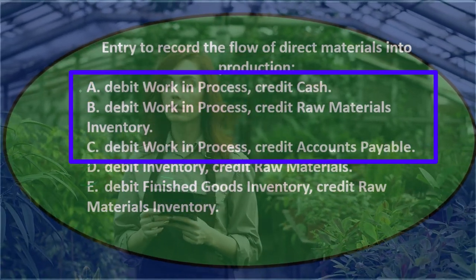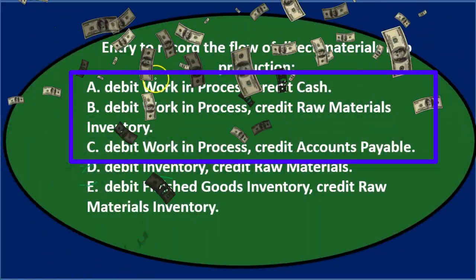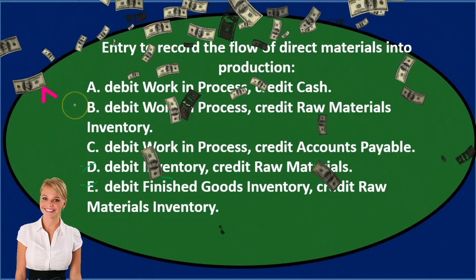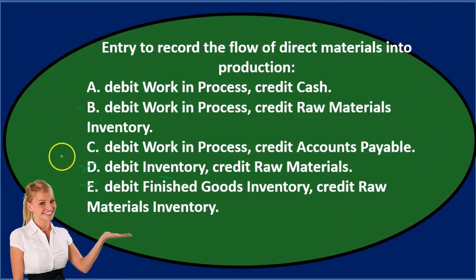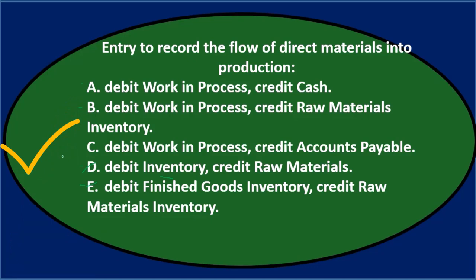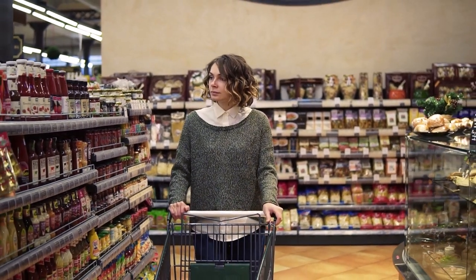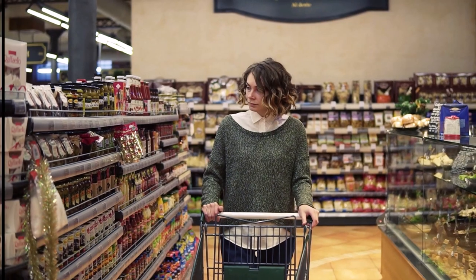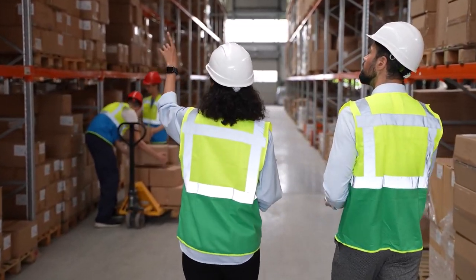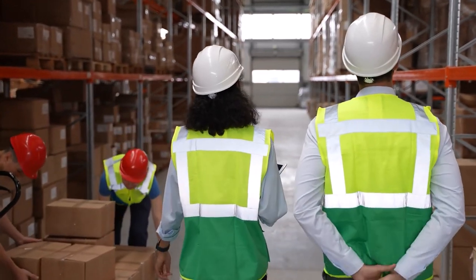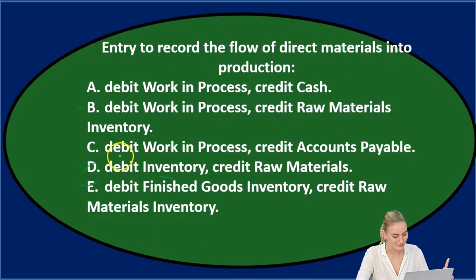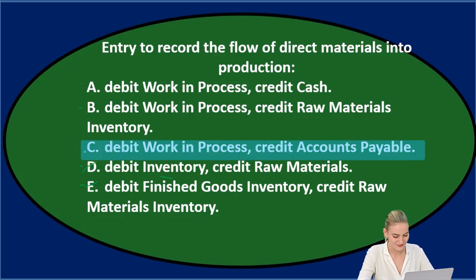A says debit work in process and credit cash — I'll keep that for now. B says debit work in process, credit raw materials inventory — I'll keep that. C says debit work in process and credit accounts payable. That's not quite right because it would be like we just purchased it on credit and put it directly into work in process. That might work for a small company, but usually for a larger company it's going to go through the warehouse first — through materials inventory. So it's not C.